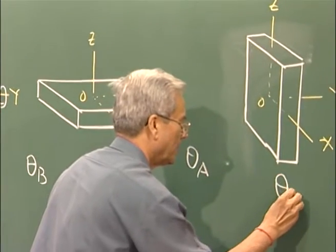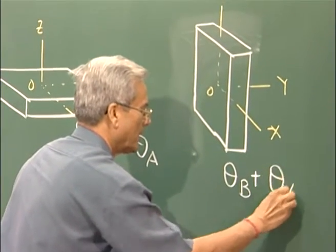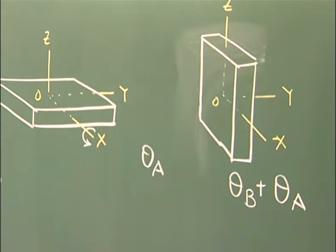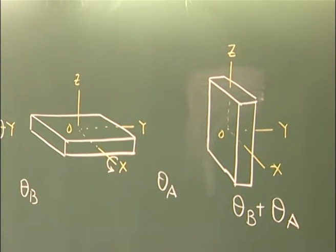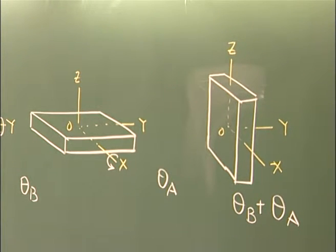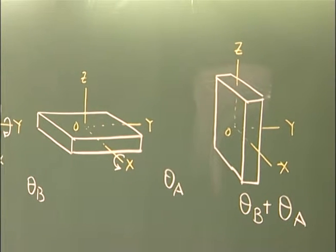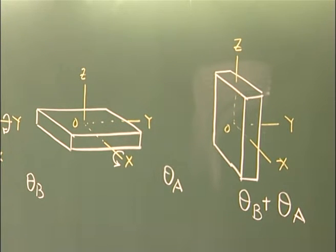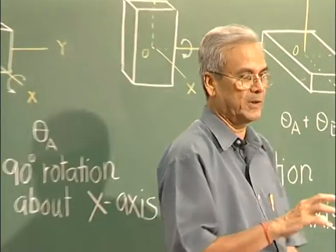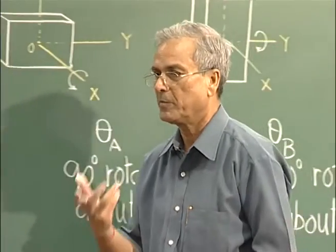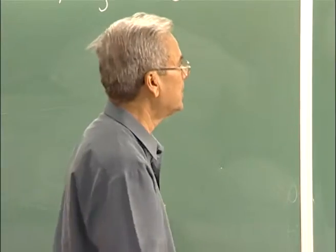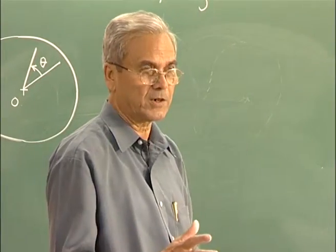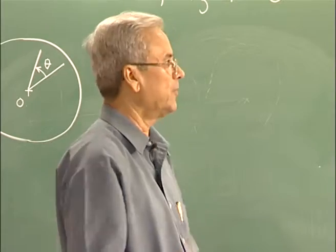The situation we get through rotations theta_b plus theta_a. If we compare the results, it is very clear that theta_a plus theta_b does not yield the same result as theta_b plus theta_a. But for vector quantities, addition must be commutative — it should be independent of the order in which quantities are added. Thus, it proves clearly that finite rotations cannot be treated as vector quantities.